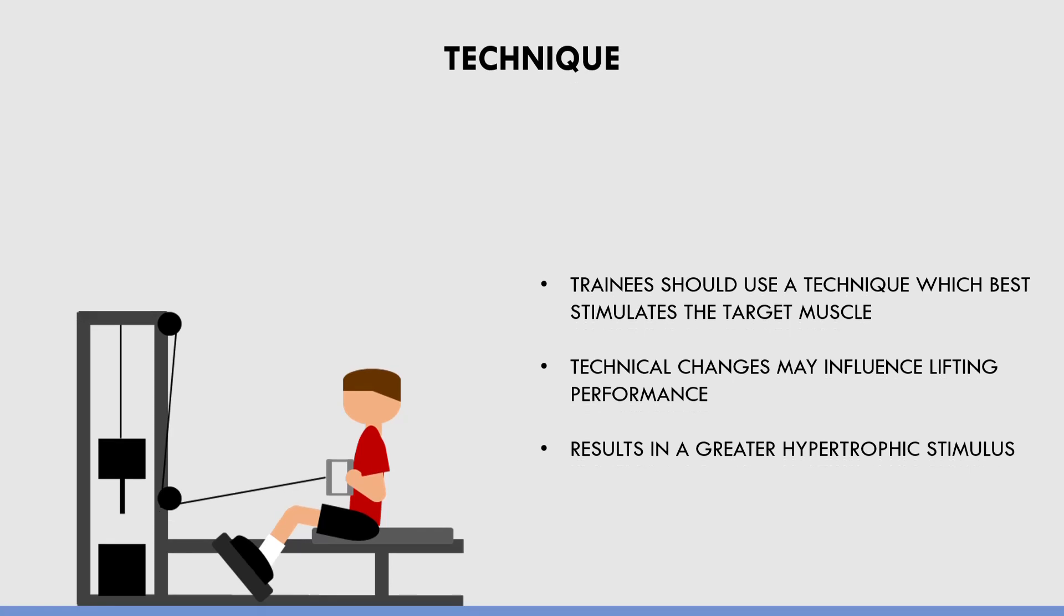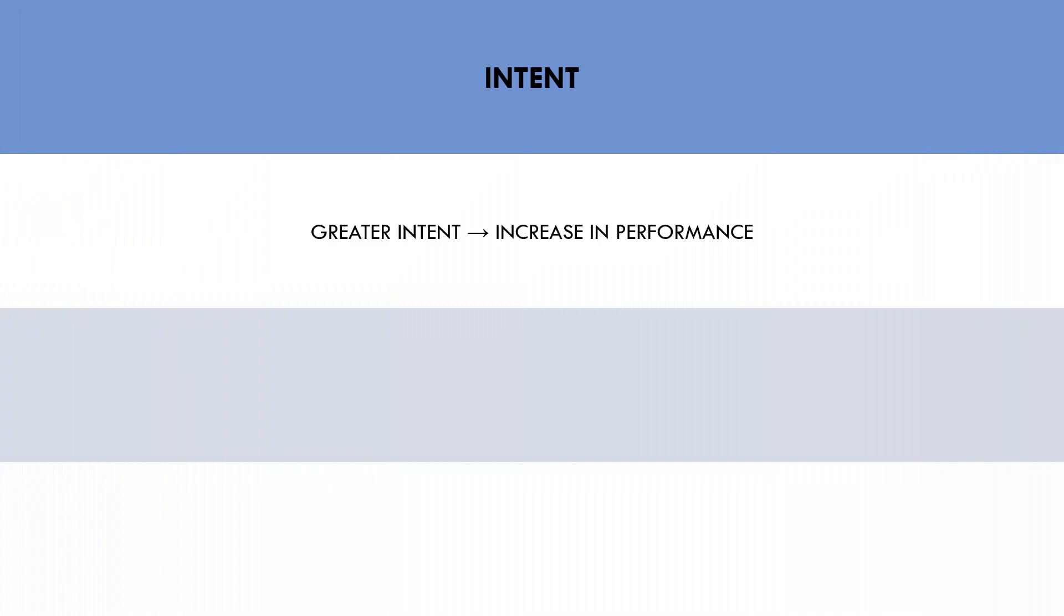The next factor that can acutely influence lifting performance is intent. Simply put, if we are more intent with a given set, then we are more likely to perform more reps or lift more load. On the other hand, if we are less intent, our performance may not be as high. This may be due to emotional reasons or due to stimulants like caffeine. When comparing performance to other weeks of training, this may look like we have improved or decreased performance, but it may simply be due to our intent on a particular day or for a particular set.